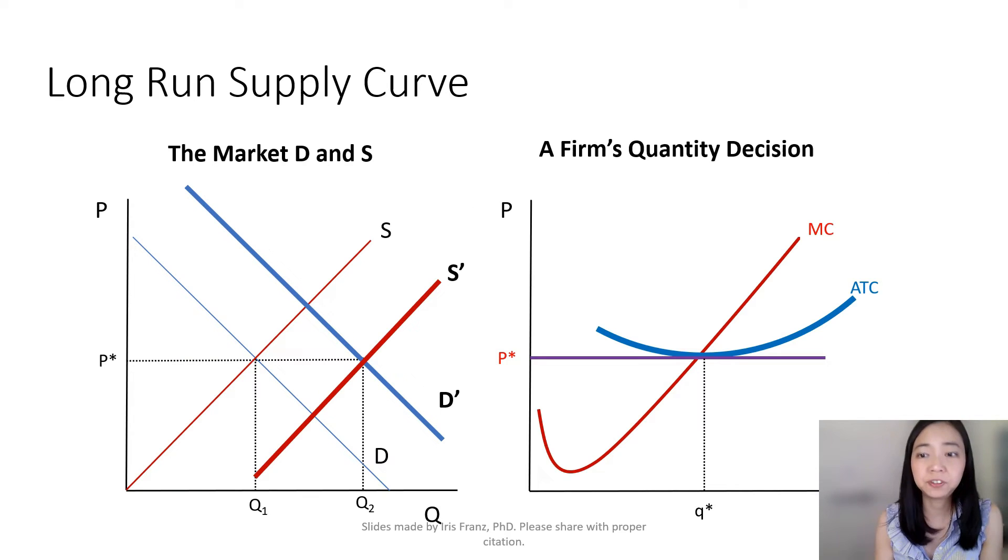In the previous video, we talked about how when there is an increase in demand, that's going to shift your demand curve from D to D prime. And that's going to cause the current firms in the industry to make a positive economic profit.